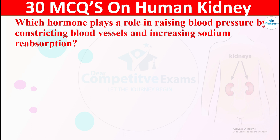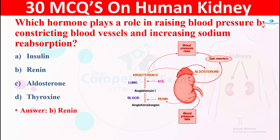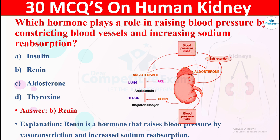Question 17: Which hormone plays a role in raising blood pressure by constricting blood vessels and increasing sodium reabsorption? Options are: A) insulin, B) renin, C) aldosterone, or D) thyroxine. The right answer is renin. Renin is a hormone that raises blood pressure by vascular constriction and increased sodium reabsorption.